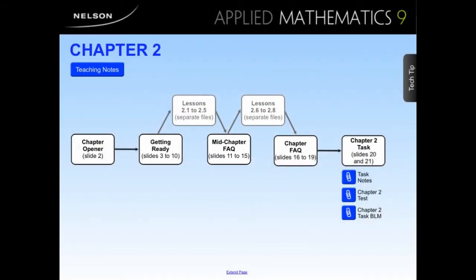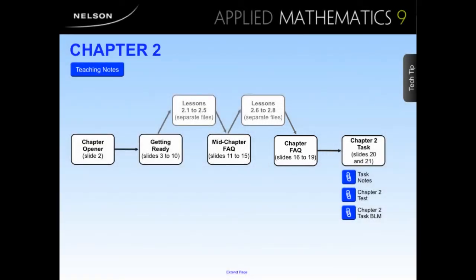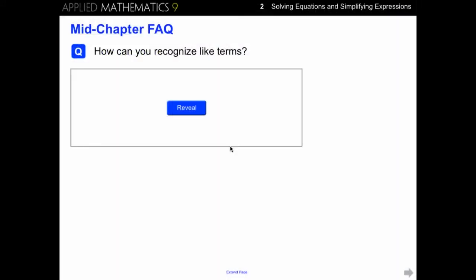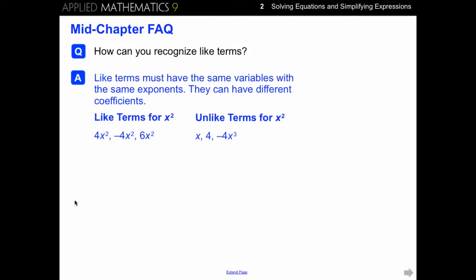Let's go back to our chapter organizer and see what other resources are available to support each lesson in the interactive whiteboard package. Halfway through a chapter you have access to mid-chapter FAQs, and chapter FAQs are at the end of each chapter. The mid-chapter review includes FAQs to review the contents of the first half of the lessons, and the chapter FAQs provide a review of the lessons in the second half. The FAQs consist of questions about skills and concepts followed by an explanation and an example, and can be used to ensure students have understood the concepts and to help clear up any misconceptions.